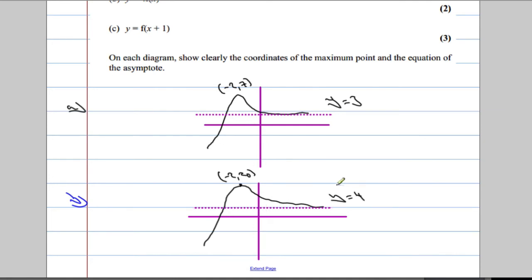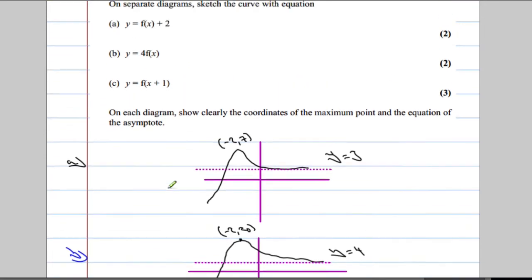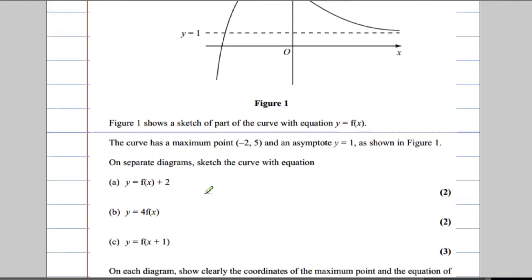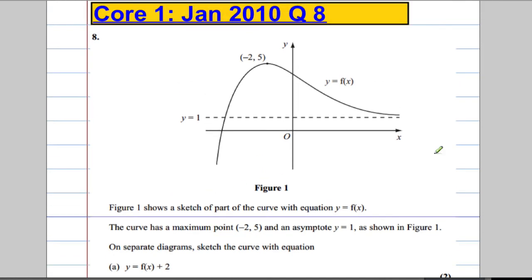So that's also been stretched up by a scale factor of 4. And then the last part is to show y equals f of x plus 1. So what's going to happen here? Y equals f of x plus 1. Now, when we're adding or subtracting and we're inside of f of x, that is a horizontal translation by a scale factor of minus a.